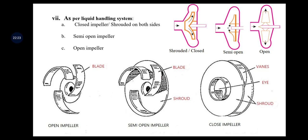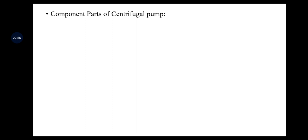Additionally, pumps are classified as monoblock pumps and submersible pumps. Submersible pumps are submerged in the water, whereas monoblock pumps remain above the well at the dry surface level. This concludes the classification of centrifugal pumps.